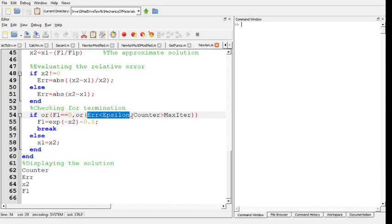If the error is not less than the tolerance, then we check whether the counter, the number of iterations, exceeded the maximum number of iterations or not. If not, then, sorry, if yes, then we break again.